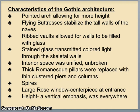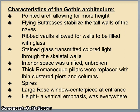Some basic characteristics of Gothic architecture: pointed arches, which allow for more light; flying buttresses, which stabilized the tall walls of the naves and were essentially external structures to balance the weight of the ceilings; ribbed vaults, which allowed walls to be filled with glass rather than stone to support the structure; and stained glass that transmitted colored light through these skeletal walls, so the interior space was unified and unbroken.